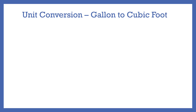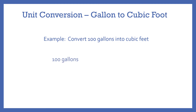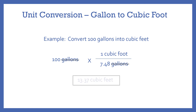Now onto the conversion. As an example, let's say you have 100 gallons and you want to convert those gallons into cubic feet. You take the 100 gallons and multiply it by one cubic foot per 7.48 gallons. The units of gallons cancel out, and the result is 13.37 cubic feet.